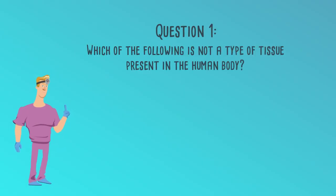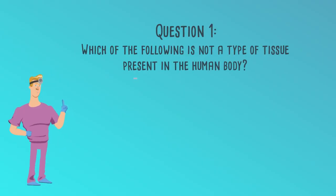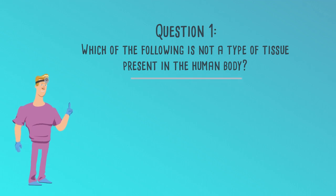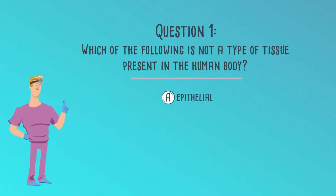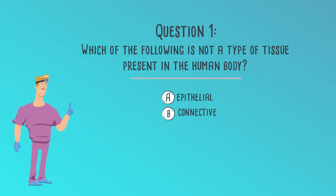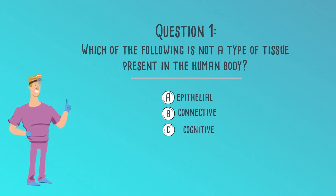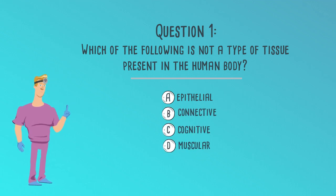Question 1. Which of the following is not a type of tissue present in the human body? A. Epithelial, B. Connective, C. Cognitive, or D. Muscular.